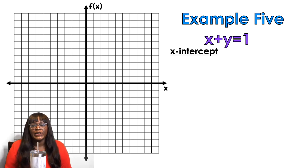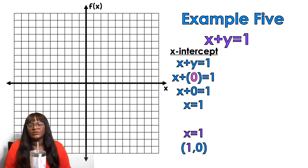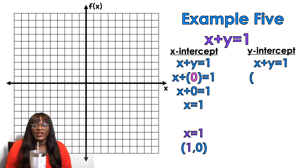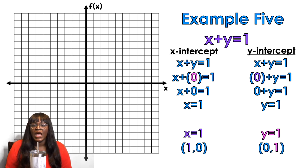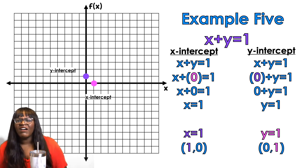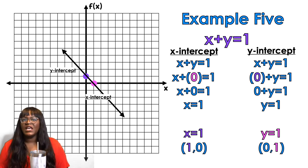Running through the next example quickly: x plus y equals 1. For the x-intercept, plug in 0 for y — x equals 1 — so the x-intercept is (1, 0). For the y-intercept, plug in 0 for x — 0 plus y — y equals 1 — so the y-intercept is (0, 1). Plot both points and draw the line. Easy peasy lemon squeezy.